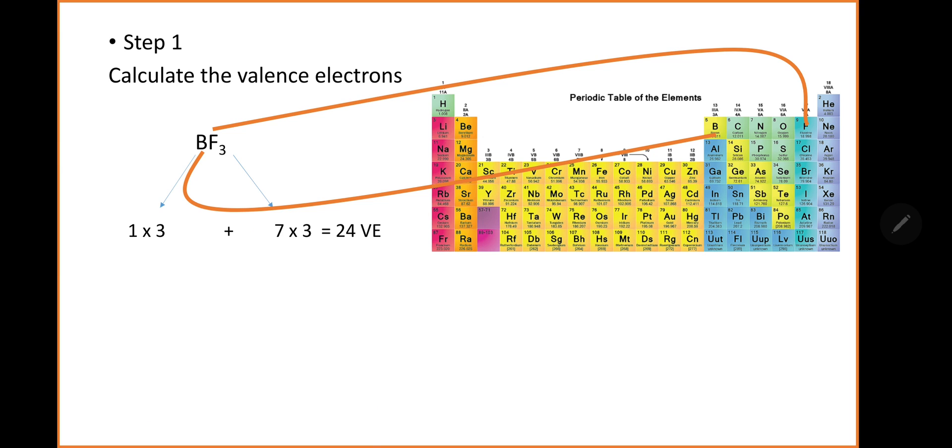Let's multiply the coefficients. The coefficients are these small numbers as we would call them. So 1 times 3 plus 7 times 3, 24.